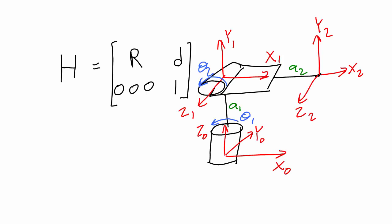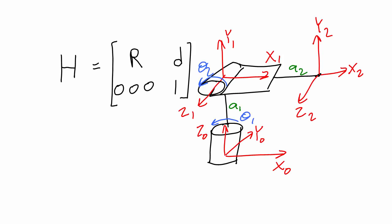Let me show you an example. Here I've drawn the first two joints of an articulated manipulator and I've filled in the coordinate frames, the joint variables, and the link lengths. We could start finding the homogeneous transformation matrix for this manipulator by finding the rotation matrix from frame 0 to frame 1. We would first figure out how to get frame 0 to match frame 1.